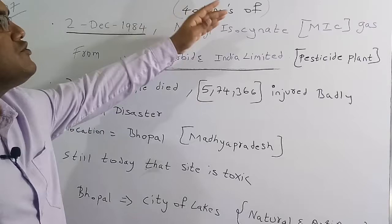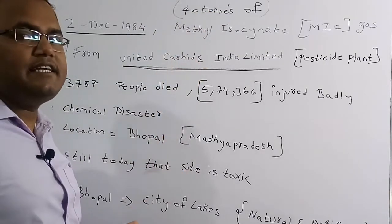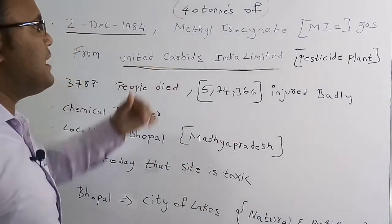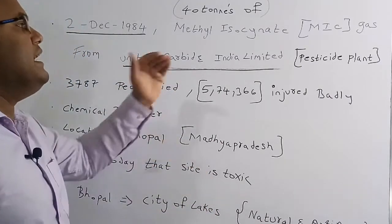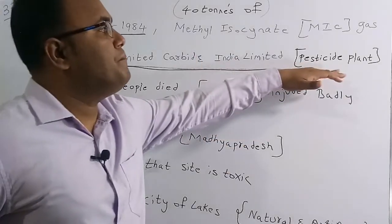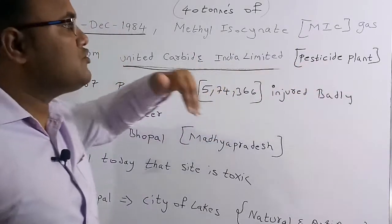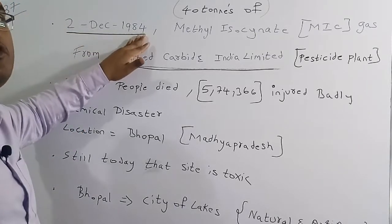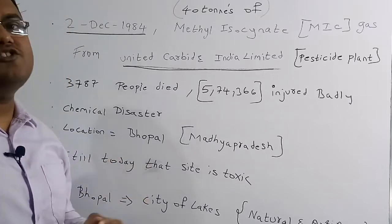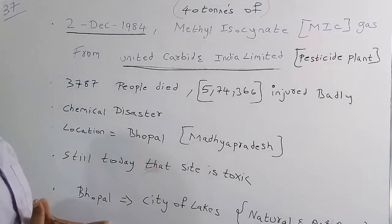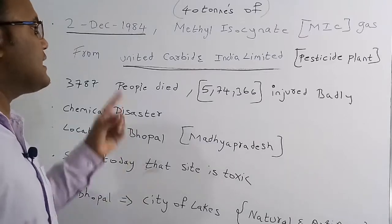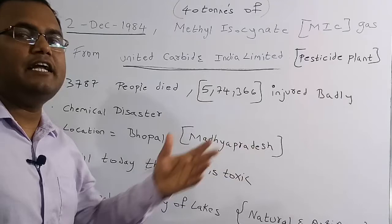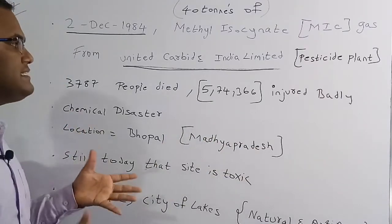The total gas leakage was 40 tons of Methyl Isocyanate from Union Carbide India Limited, a pesticide plant. This event occurred on 2nd December 1984. Key exam points: the gas name, the quantity (40 tons), the company name, and the date.